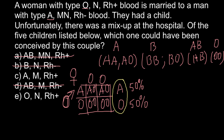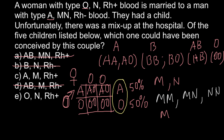In the MN blood group system, we have two alleles: M and N. These two alleles are co-dominant, meaning they can produce three different genotypes. The genotypes are MM, MN, and NN, producing phenotypes M, MN, and N respectively. So there are three possible phenotypes.